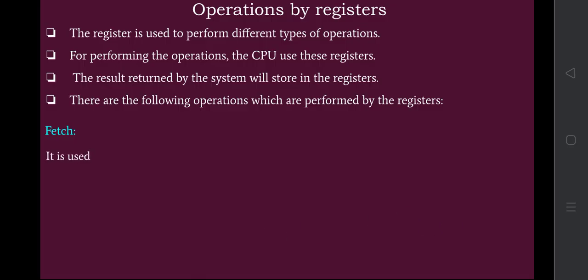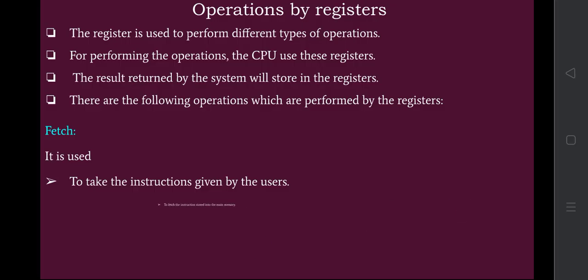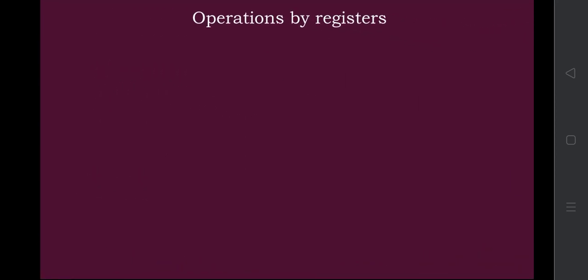The fetch operation, as the name implies, brings the data from registers as given by the user. Based upon the instruction given by the user, the fetch operation retrieves the data and brings it from the registers. It also fetches the instruction stored in the main memory, helping to store and retrieve data to and from the main memory so that operations can be performed.